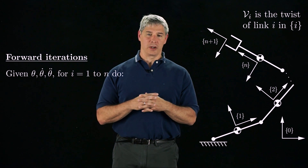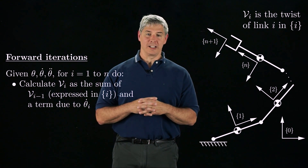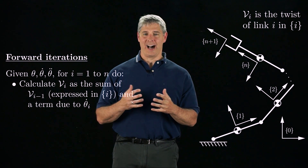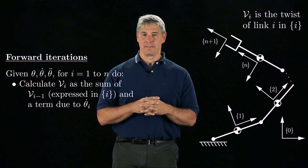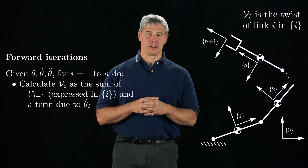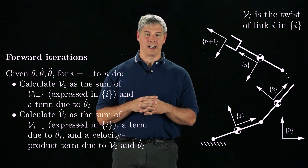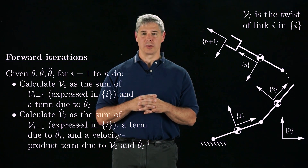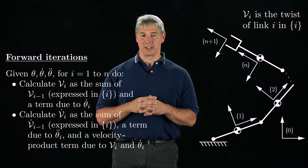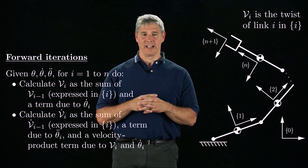Given the vectors of joint positions, velocities, and accelerations, and starting from link 1, we calculate the twist v_i of link i as the sum of the twist of link i-1 expressed in the i-frame, and the added velocity due to the joint velocity theta_i dot. Then we calculate the acceleration of link i as the sum of the acceleration of link i-1 expressed in the i-frame, plus the added acceleration due to joint acceleration theta_i double dot, plus the velocity product term due to theta_i dot and the twist v_i.